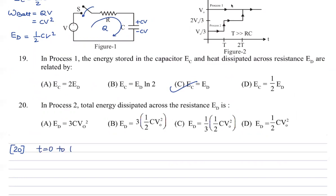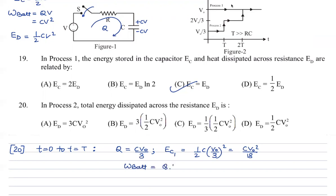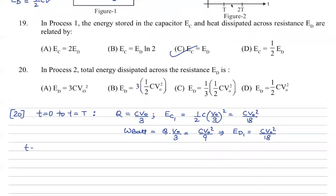From t equal to zero to t equal to capital T, the capacitor remains uncharged. Charge delivered by the battery becomes CV_not by 3. The energy stored in the capacitor in this first step, which we call E_C1, becomes half C times (V_not/3) squared. The energy dissipated in the first step is then calculated from this.